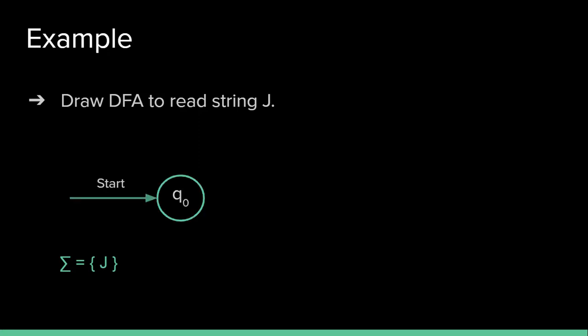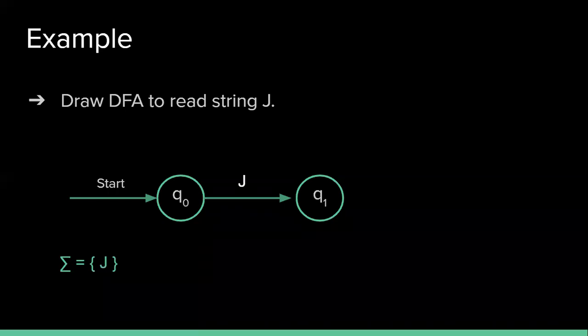In last video we have seen one example, draw DFA to read string J. Let's complete it. As we know that here the input symbol is only J, so our initial state is q0. From q0 if we read J we will reach to new state q1. As we have read the string successfully, I can mark q1 as my final state.